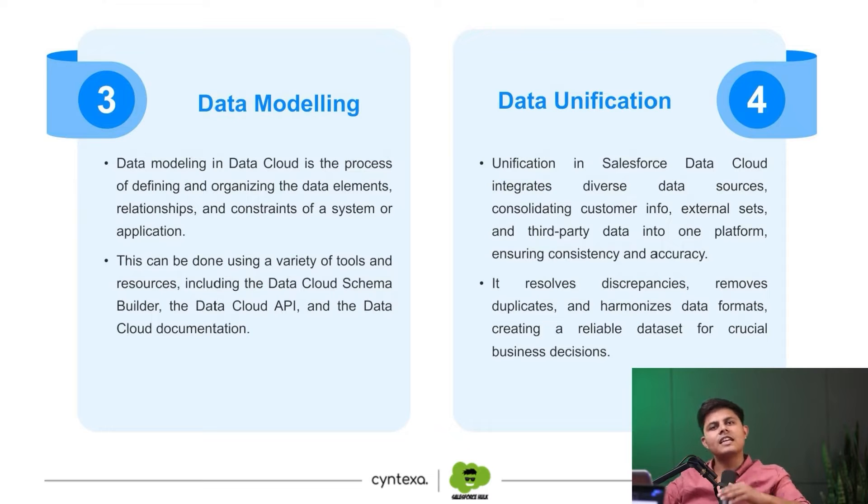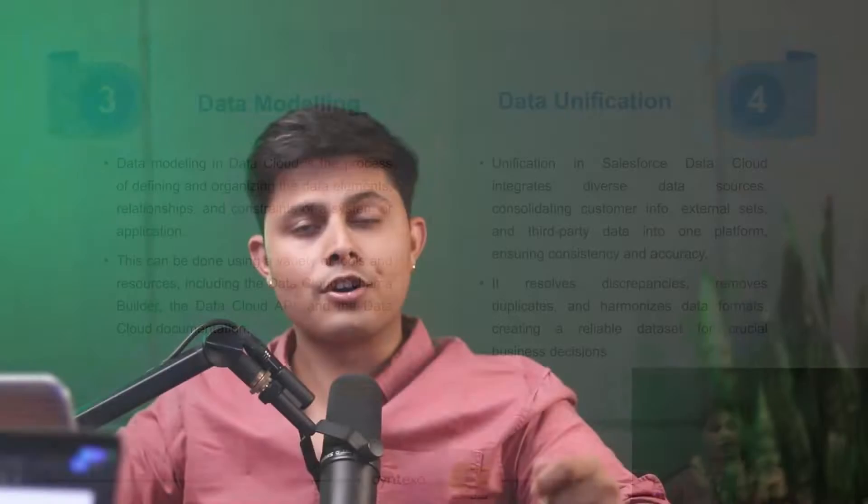Then data unification comes up. Let's say my data is stored in three different rows, with information from three different platforms — even my email ID is different across them. What happens in unification is all of that information gets unified. For example, I was watching a sneaker on a website but not buying it, while I actually bought it from the offline store. The online platform still thinks I haven't bought that sneaker — there's no real-time sync. So in order to get that real-time sync, data unification happens.